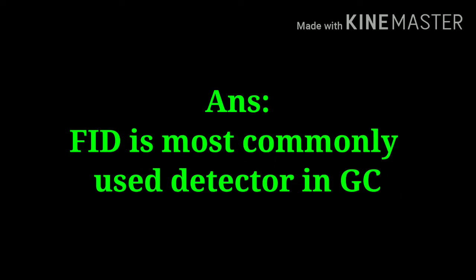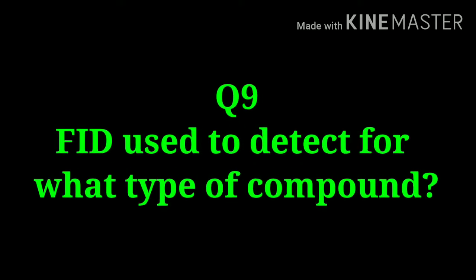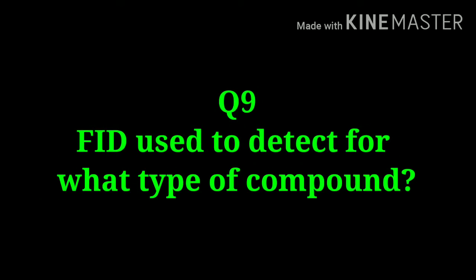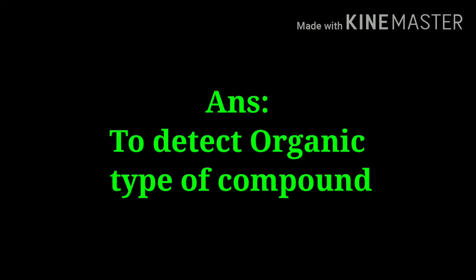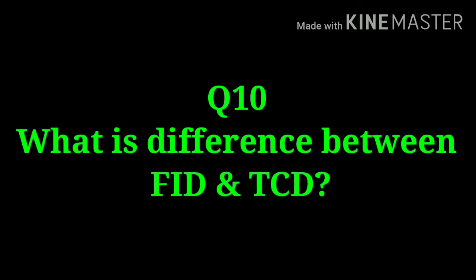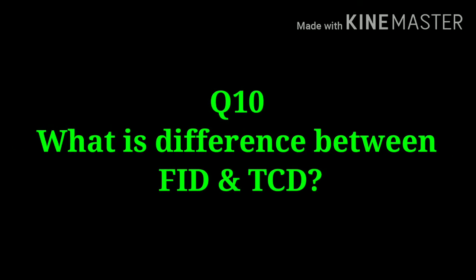Which is the most commonly used detector in gas chromatography? FID — the flame ionization detector — is the most commonly used. FID is used to detect organic compounds.